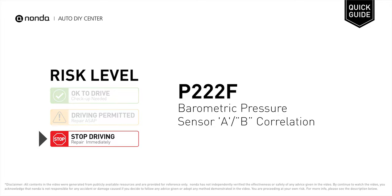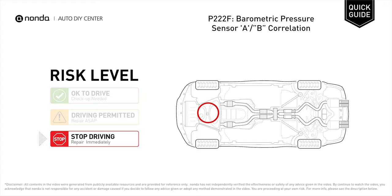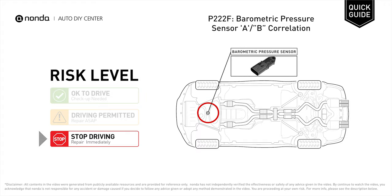P222F is a diagnostic trouble code for barometric pressure sensor A or B correlation. Under this circumstance, stop driving and repair your vehicle immediately. It indicates a variance within the barometric pressure sensor or its circuits A and B signals.